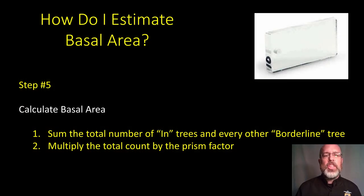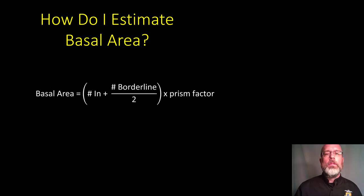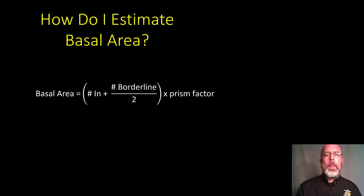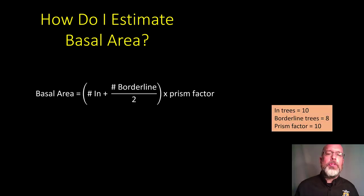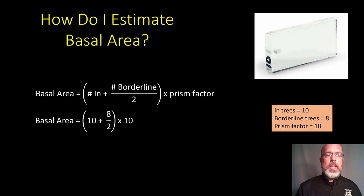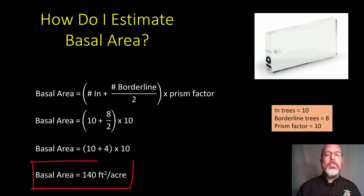Finally, you calculate basal area. This is the sum total of the in trees plus every other borderline tree, multiplied by the prism factor. You can see this is a factor-of-10 prism. The equation is: basal area equals (N_in + N_borderline ÷ 2) × prism factor. For example, if we counted 10 in trees, 8 borderline trees, and the prism factor is 10, that's (10 + 8/2) × 10 = (10 + 4) × 10 = 140 square feet of basal area per acre.